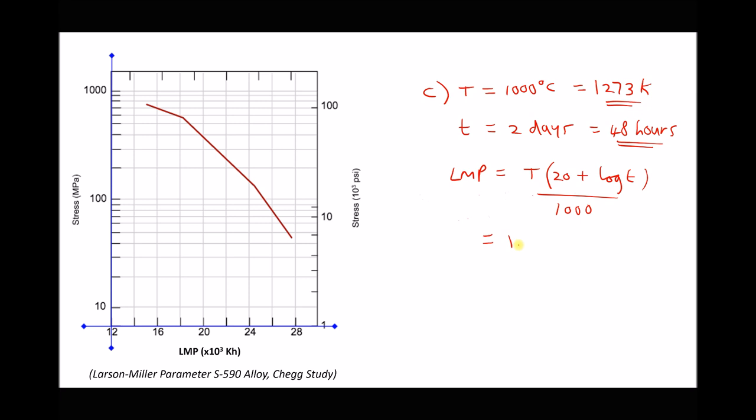And our formula, if you recall, was T times (20 plus log lowercase t) divided by 1,000. And plugging in values, we get 1,273, our temperature, times (20 plus log of our time in hours, 48) all divided by 1,000. Now when we run that through the calculator, we get a value of LMP equal to 27.6. Now we have our value for LMP, we can determine the maximum allowable stress that will allow our component to be held for two days at a temperature of 1,273 under tension.